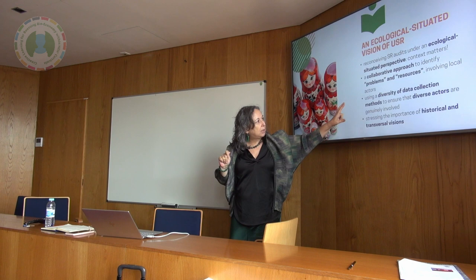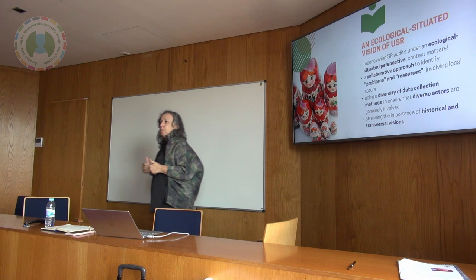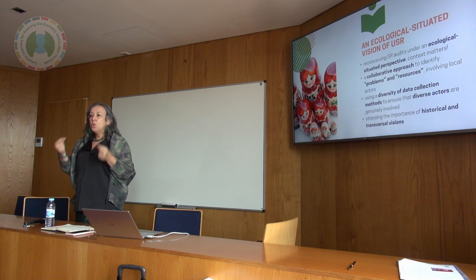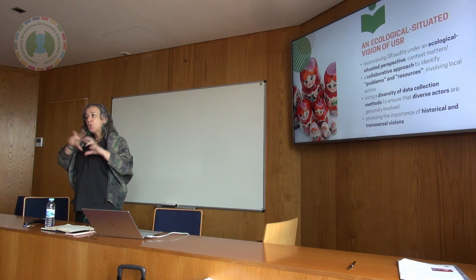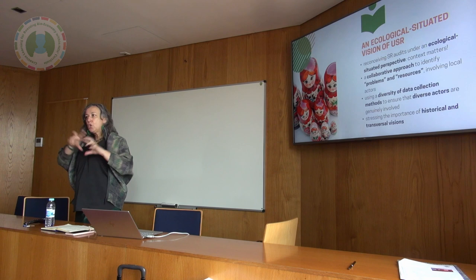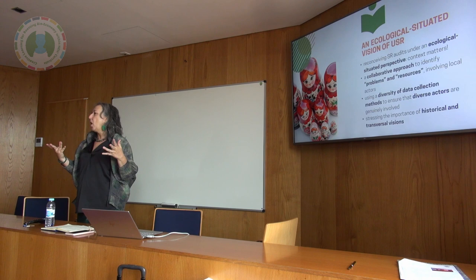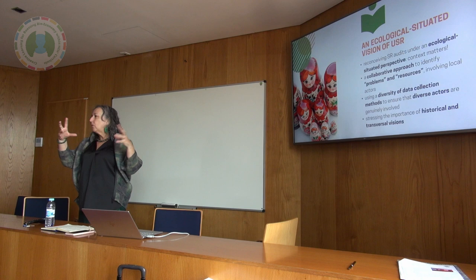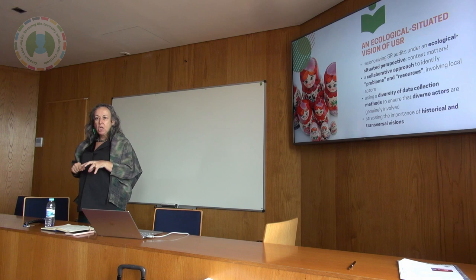Two important things: a diversity of methods of data collection and a diversity of actors, in order to do an audit of social responsibility in the context of universities. They should speak with a lot of people inside the universities and listen to diverse bodies of actors — not only the rector or vice rectors, but students, professors, researchers, and staff — if you want to have a vision of what the university is doing in terms of social responsibility.